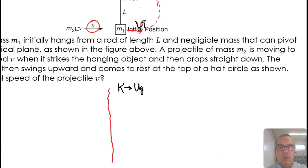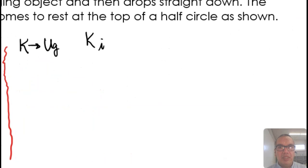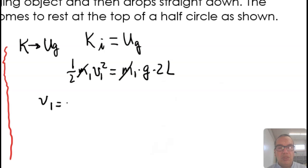From conservation of mechanical energy, we have that the initial kinetic energy after the collision is equal to the potential energy at the highest point, where M1 comes to rest. So, one half M1 V1 squared is equal to M1 g times 2L because the change in height is the diameter of the circle described. This results in V1 equal to the square root of 4gL.